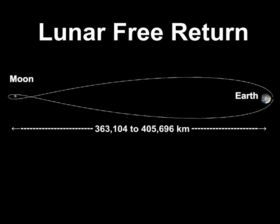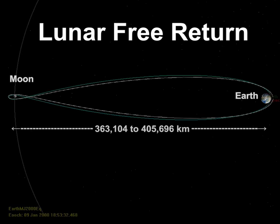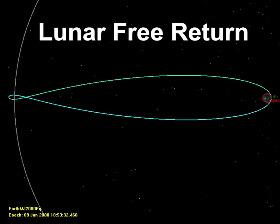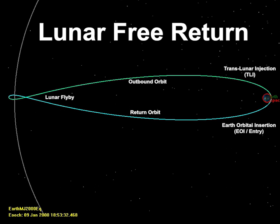Lunar free returns are a class of Earth-Moon trajectories that allow a spacecraft to conduct a lunar flyby without the expenditure of any propellant after departing Earth orbit. They're typically divided into three phases with two maneuvers: translunar injection, outbound orbit, lunar flyby, return orbit, and Earth orbital insertion or Earth reentry.